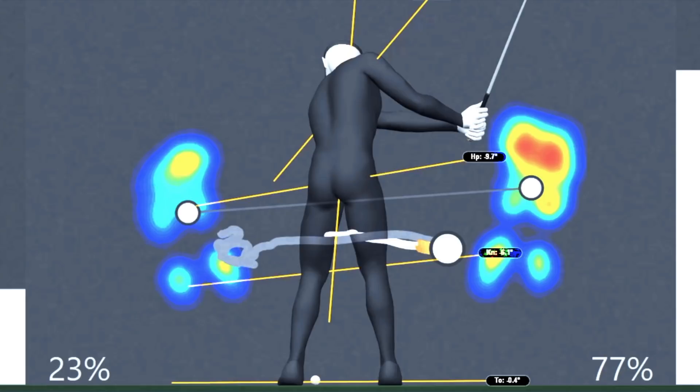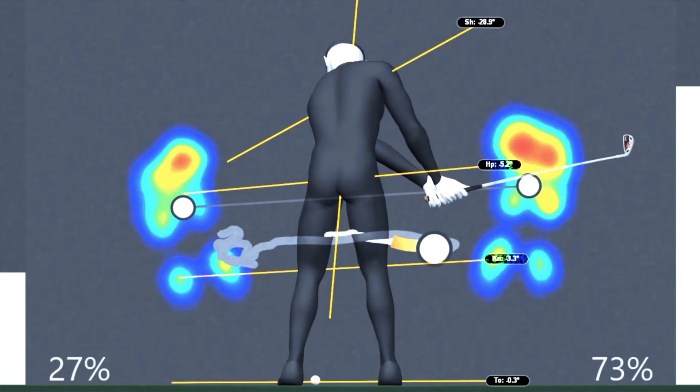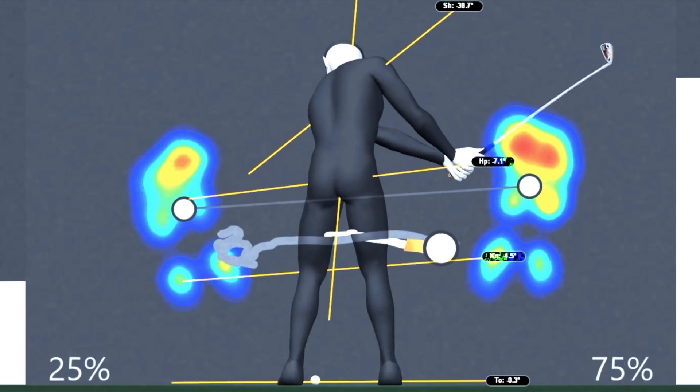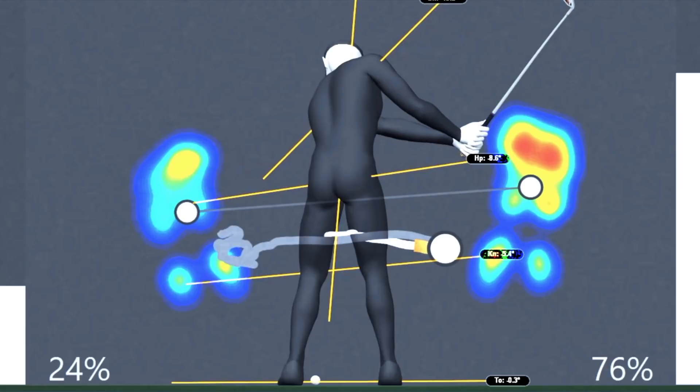You want that 80% or 75 or 70, depending on the player, to be no later than this left arm parallel. We have a lot of golfers that reach their maximum pressure to the right in here. So somewhere in this window is where you want that max pressure. Because again, we need time to get it from the left side over to the front side and then have enough time to transfer that into club head speed.